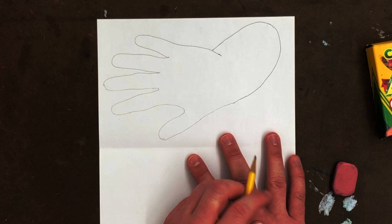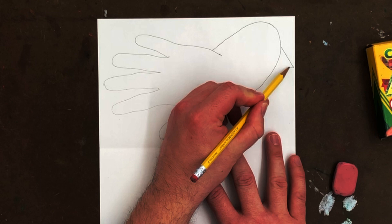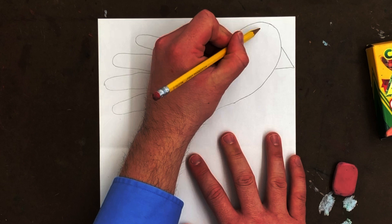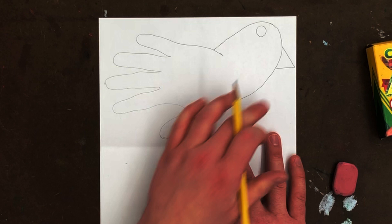And I'm going to put a beak on it, which is basically a triangle. I need to put an eye on it. That's pretty much a circle. Robins have red feathers on the front of them. That's called the red breast.